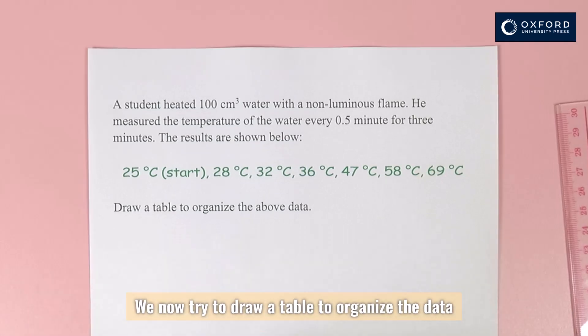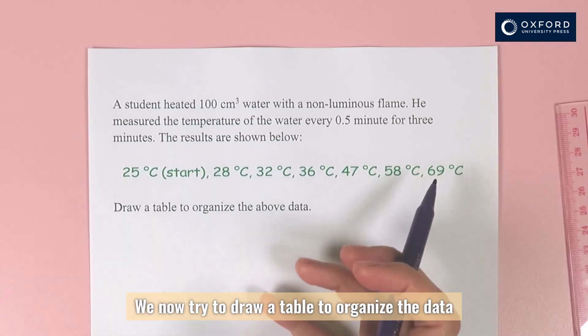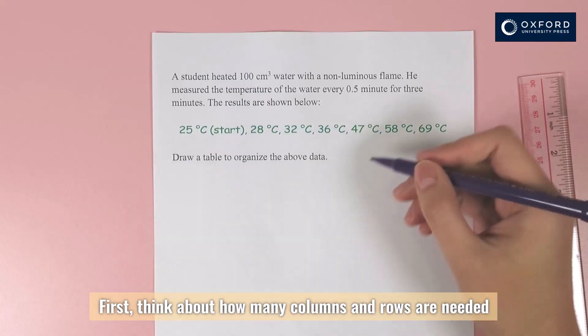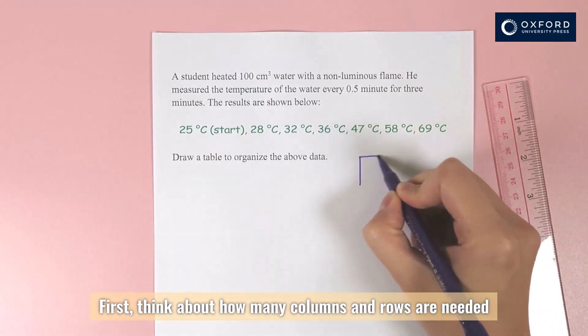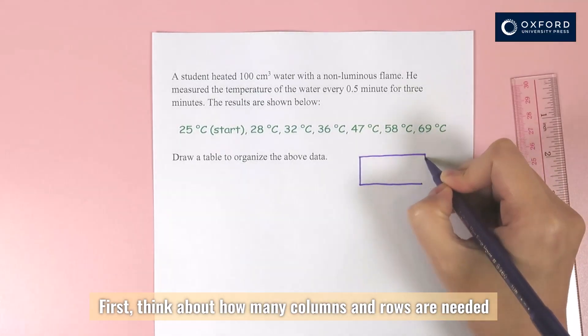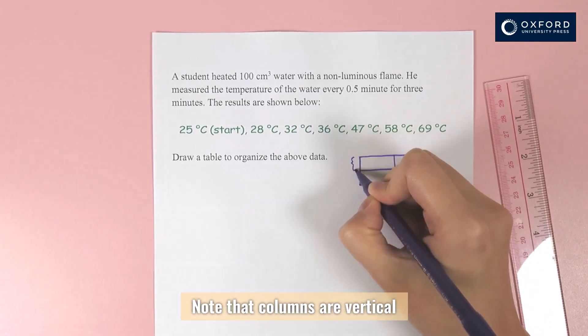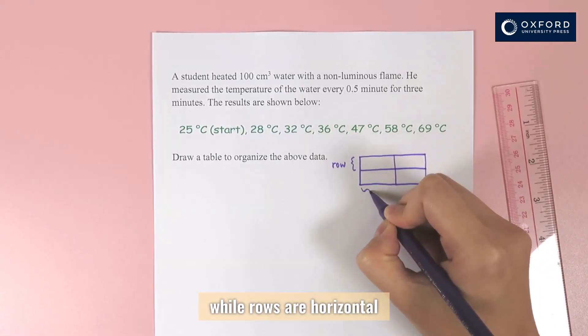We now try to draw a table to organize the data. First, think about how many columns and rows are needed. Note that columns are vertical, while rows are horizontal.